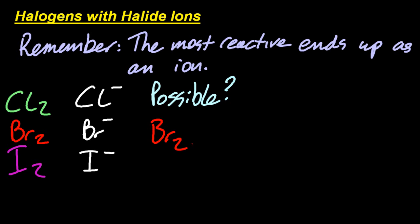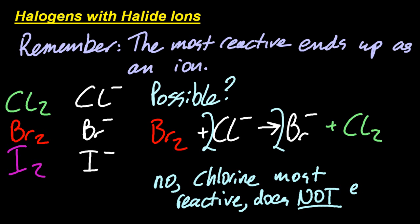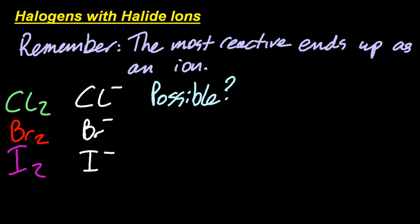Another sort of question, is this possible? Bromine and chloride? Is it going to do that? Is it going to turn from red to green? Does the most reactive end up as an ion? Well, what's more reactive, bromine or chlorine? Chlorine's more reactive. No. Chlorine's the most reactive. It's highest in the halogens. And that doesn't end up as an ion. So no, that won't work. It won't turn from red to green. It's not going to work.